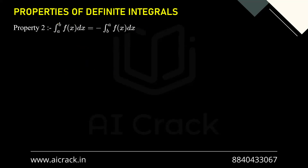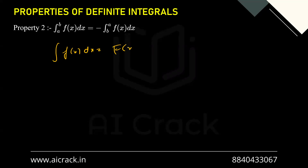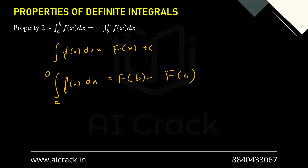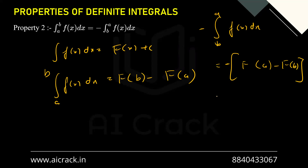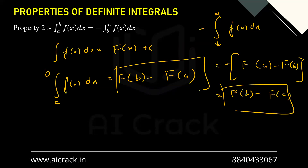Now let's talk about the second property: the integral from a to b of f(x)dx equals minus the integral from b to a of f(x)dx. If the integral of f(x)dx equals capital F(x) + C, then the integral from a to b of f(x)dx is F(b) − F(a). Now the negative of the integral from b to a of f(x)dx becomes minus [F(a) − F(b)], which equals F(b) − F(a). So this is the same — hence proved.